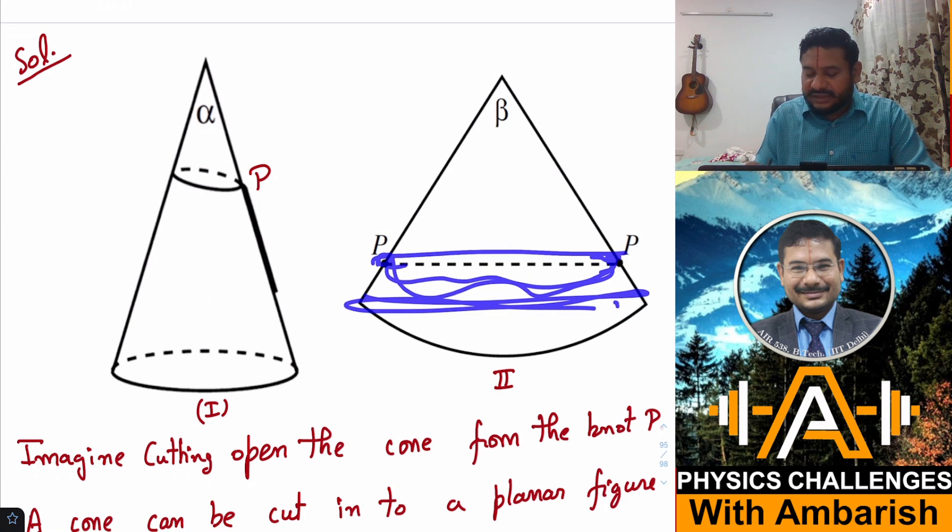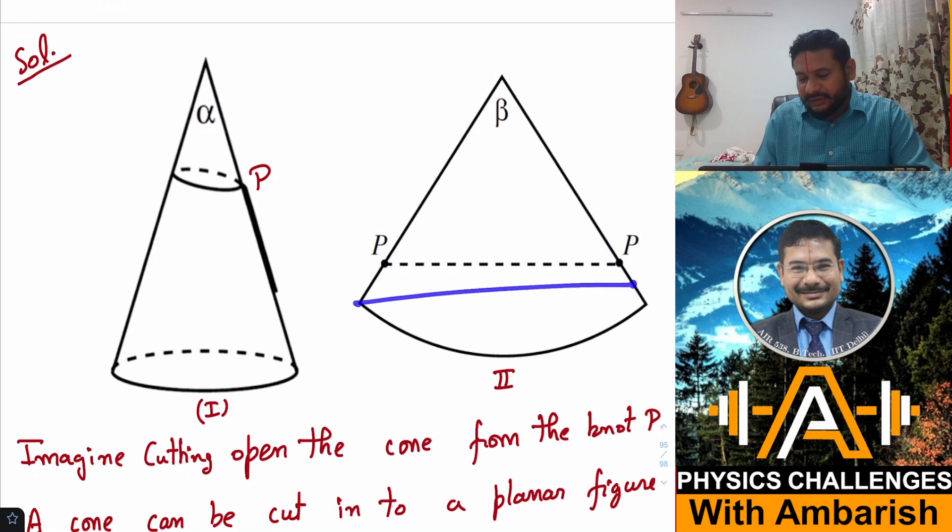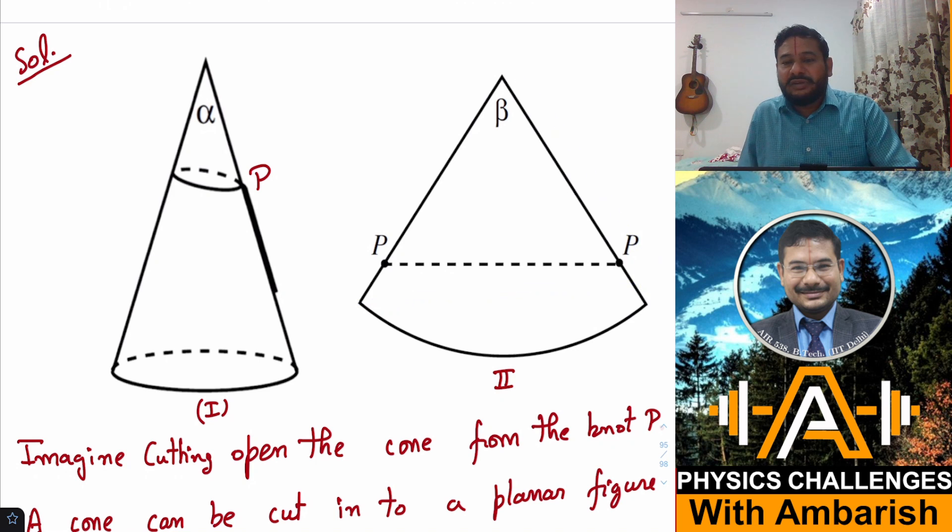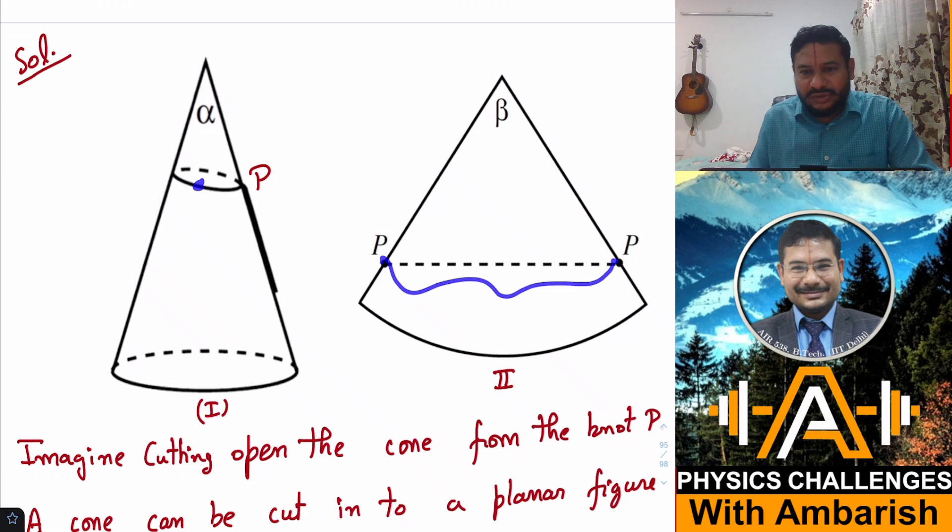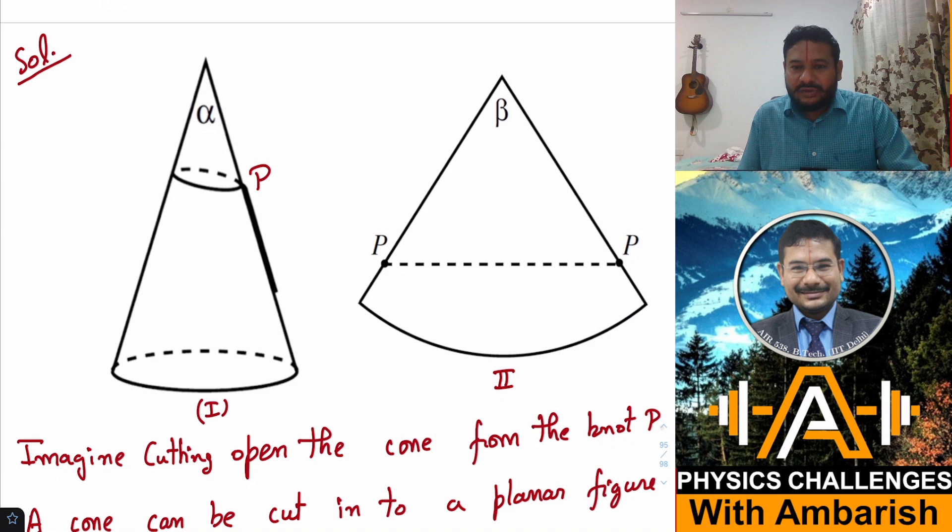That's one way of thinking about it or otherwise you can think that if there is tension, then how can this rope be loose? So it must be following a shortest path between from P to P along the surface of the cone shortest possible path. So if that part is clear, then this problem becomes pretty easy.